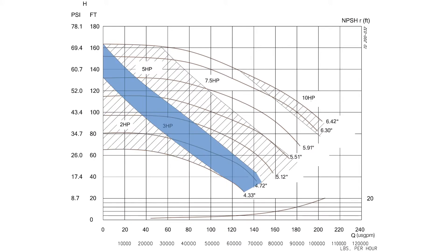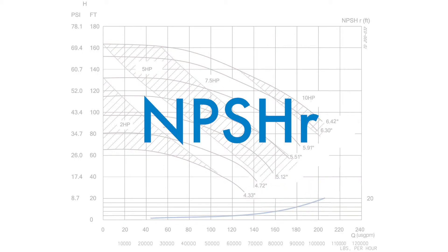This curve features a pump that can operate from 2 to 10 horsepower depending on the desired performance. On this graph, each curve represents a typical impeller size for this pump, ranging from 4.33 inches to a full-size 6.42 inch impeller. In addition to standard PSI and flow, the curve at the bottom of the grid indicates NPSHR,